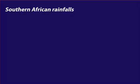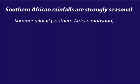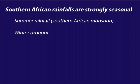Rainfalls in southern Africa are strongly seasonal, with high rainfalls in the summer and prevailing dry conditions in the winter. Patterns and incidents of rainfall are strongly tied to the southern African monsoon — these are monsoonal rainfalls. Let's see how these come about.